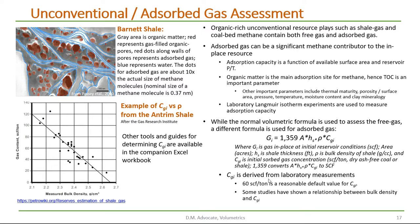Absorption capacity is derived from laboratory experiments. As a general rule of thumb, 60 standard cubic feet per ton is a reasonable default value for the absorption capacity. Some studies have shown a relationship between bulk density and absorption capacity. For example, if we look at the measurements from the Antrim shale, they show the measured bulk density as a function of the gas content or absorption capacity.